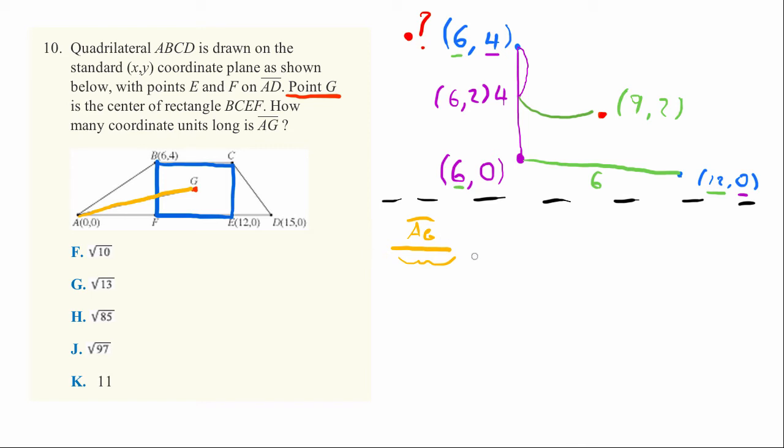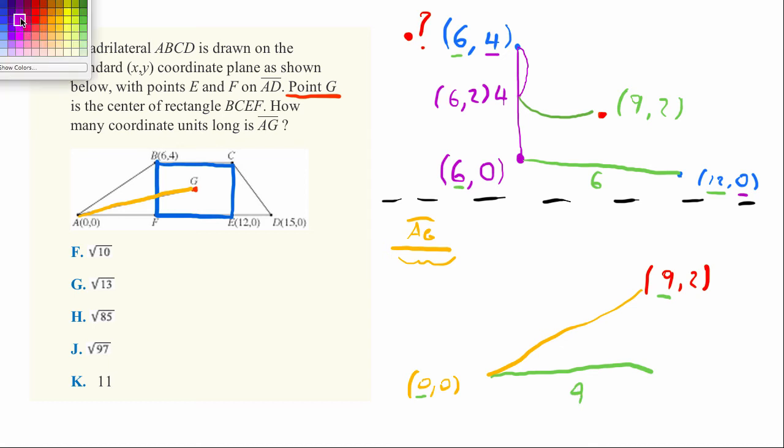So that takes us to the second half of our problem. Now we have point G, he's up here at 9, 2. And we're trying to figure out what is the distance between G and this point A over here that is down at 0, 0. And here we can approach it in a very similar way. Let's ask ourselves how far over we have to go. We have to go in the x direction, so we're going from 0 to 9, so that's 9 units. And then we have to go upward, and when going upward, we're going to go from 0 to 2. So we're going to go up 2 units.